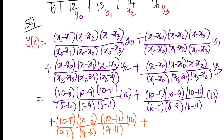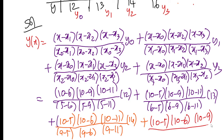For the last term, x3 equals 11: the numerator is 10 minus 5, 10 minus 6, 10 minus 9. The denominator is 11 minus 5, 11 minus 6, 11 minus 9. And y3 equals 16.